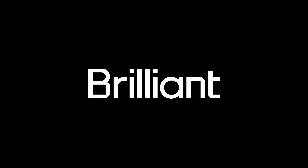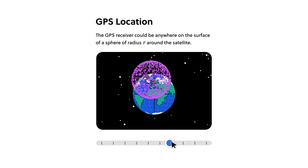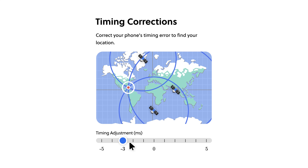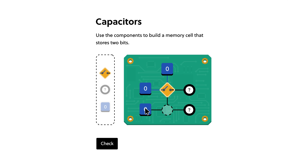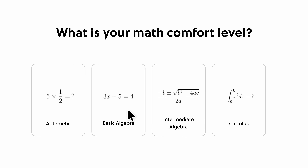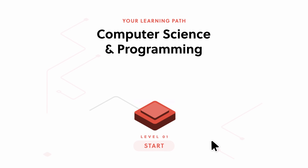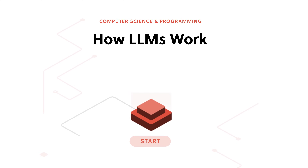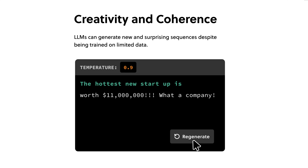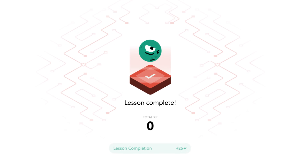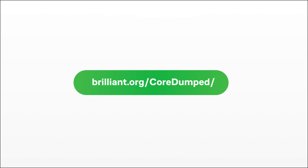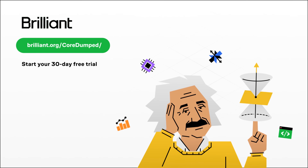One thing many of you agree on is that traditional studying can be boring. Fortunately, with Brilliant, learning new things doesn't have to mean endlessly reading PDFs. You can learn a bit each day through their intuitive teaching methods — every course is designed for learning by doing. You can choose from numerous lessons in science, math, statistics, and computer science. One of the best courses available now is on how large language models work. You can sign up for one month of Brilliant Premium for free and get a 20% discount at brilliant.org/coredumped.